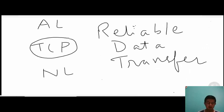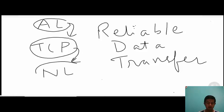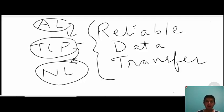TCP takes data from the application layer, creates packets, and delivers them to the network layer while guaranteeing reliable delivery to the application layer — even though it works on top of an unreliable medium. The most basic task of TCP is providing reliable data transfer. How it achieves this while working on an unreliable medium is the core design challenge, known as the Reliable Data Transfer protocol.